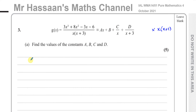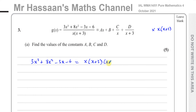We keep the left side as three x cubed plus eight x squared minus three x minus six. On the right side, we multiply ax plus b by x times x plus three, then multiply c over x by x times x plus three — the x's cancel leaving c times x plus three — and multiply d over x plus three by x times x plus three — the x plus threes cancel leaving d times x.